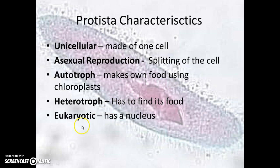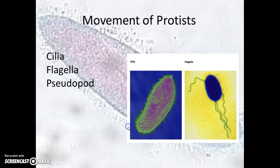The protist cell is eukaryotic, so every protist is going to have a nucleus in its cell. There are three ways that we'll study protist movement: cilia, flagella, and pseudopod.